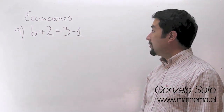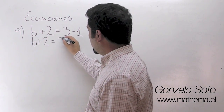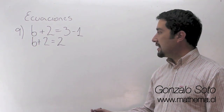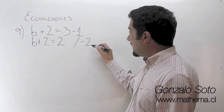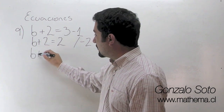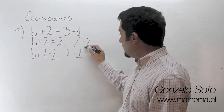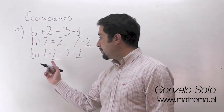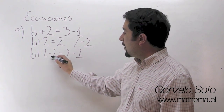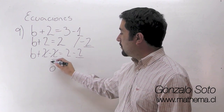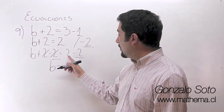En el ejercicio 9 tenemos lo siguiente: B más 2 igual a 3 menos 1, que es 2. La idea es dejar nuestra incógnita B sola, por lo tanto lo que hacemos es restar 2 en cada lado de la ecuación. ¿Para qué restamos 2? Para que esto sea 0 y el B quede solo. Números iguales con signos distintos, esto es 0. B es igual a 2 menos 2, que es 0.